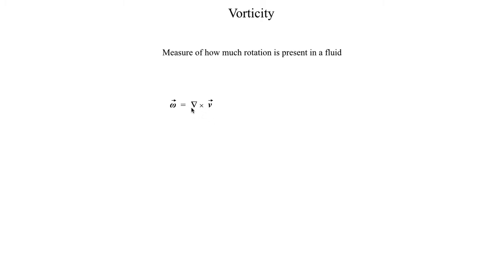The curl is defined as our del operator, which we introduced in lecture one, cross product our wind field. If you write that out in matrix form, it looks something like this. And I technically say cross product, but really what's going on here is you're actually taking derivatives.